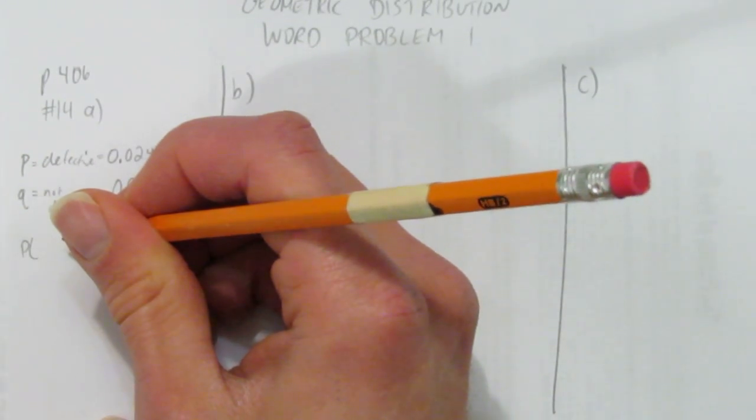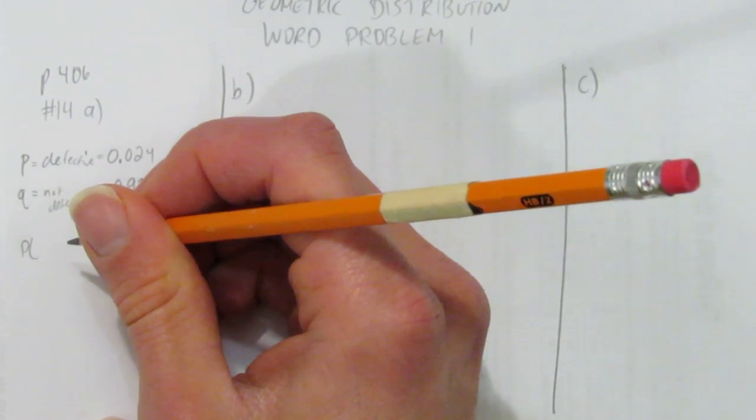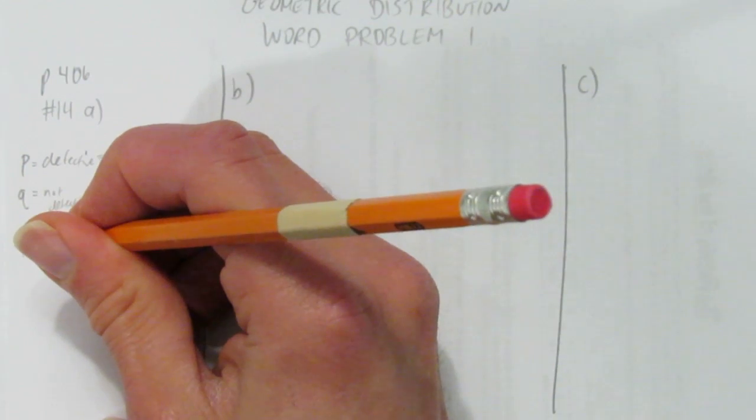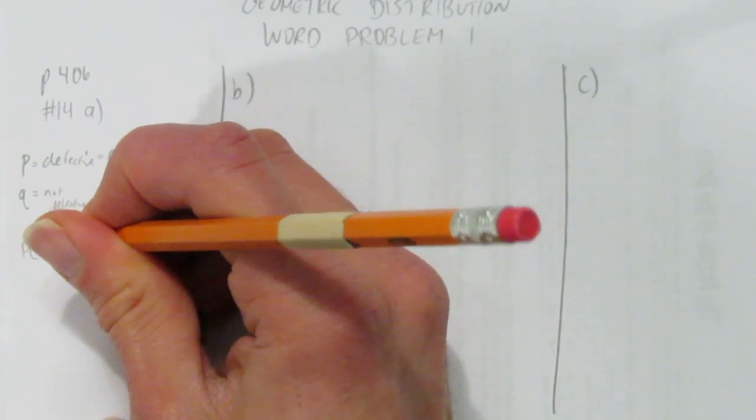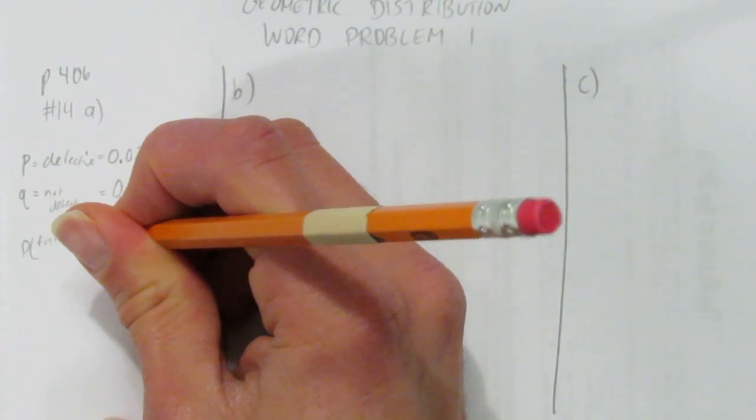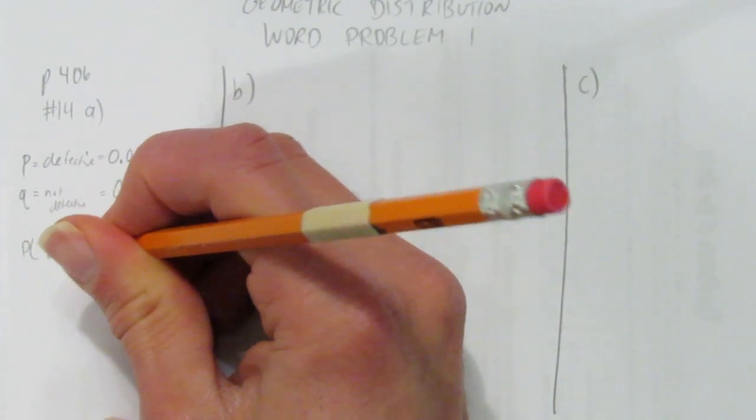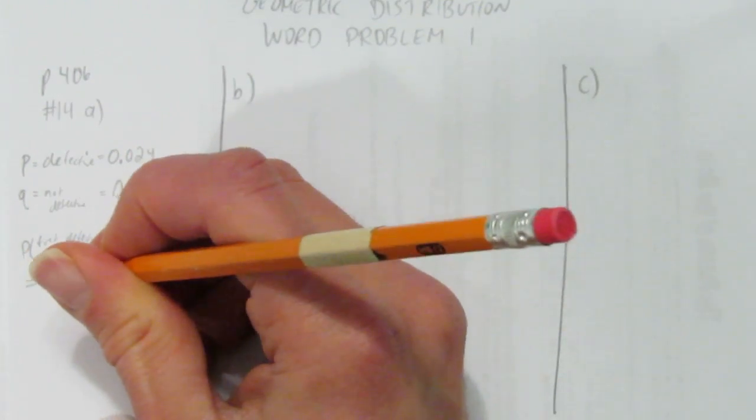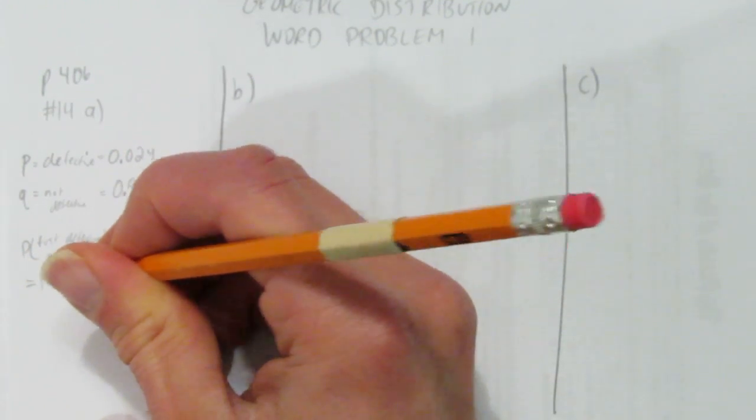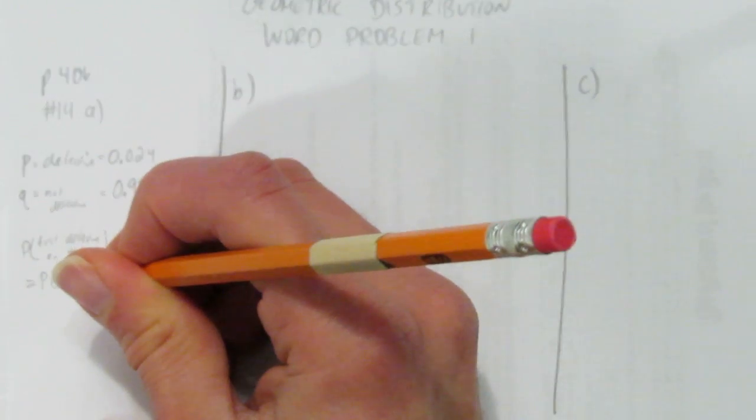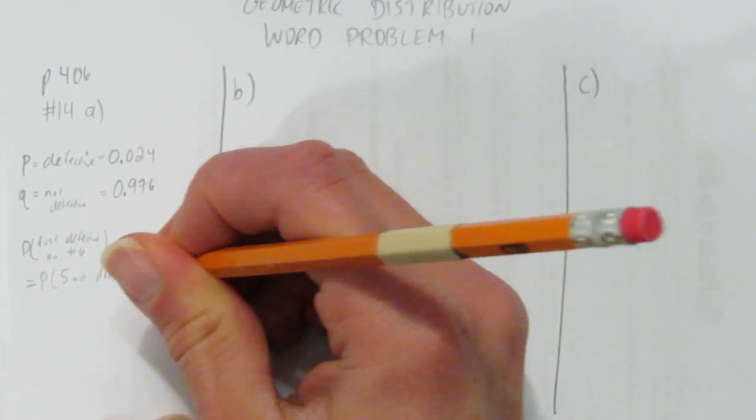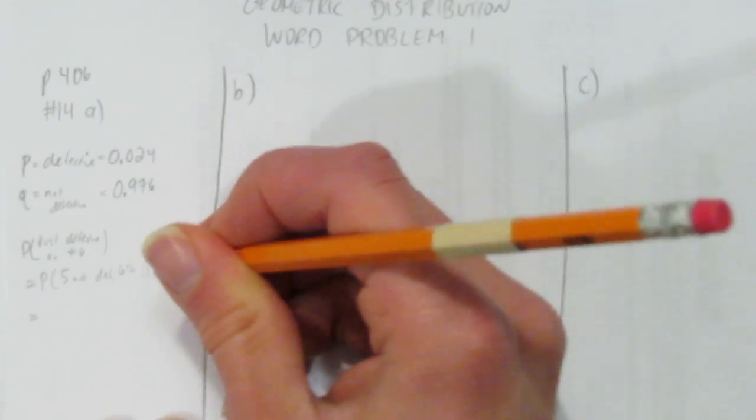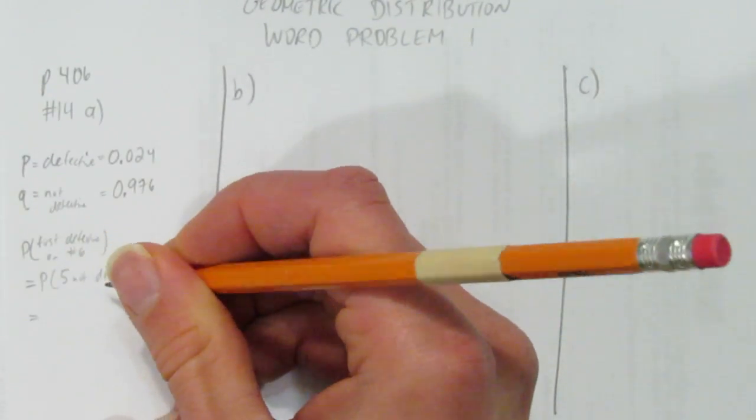What's the probability that the first defective circuit board is on the sixth one tested? Probability the first defective on number 6. Well that's just equal to the probability of 5 are not defective and the sixth is. You don't have to write that, but it helps me think and I can see what the exponents are going to be.